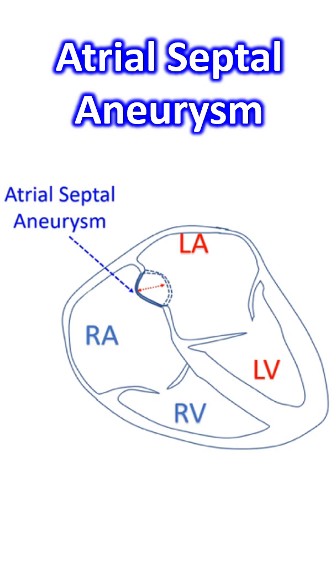MRI of the brain confirmed the findings. Anneli et al. have classified atrial septal aneurysms into 3 types: Type 1a, 1b, and 2.